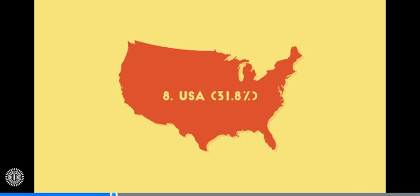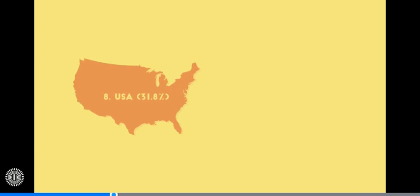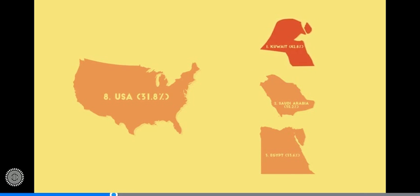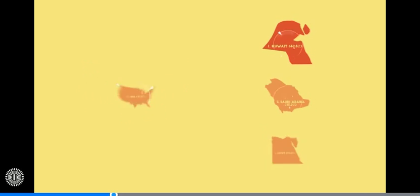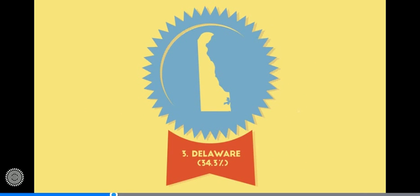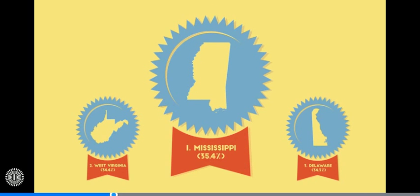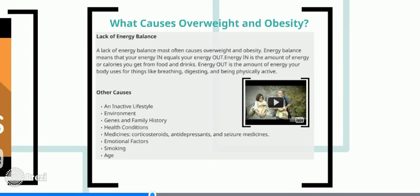The United States is the 8th fattest country in the world, with 31.8% of the population being overweight. The top three fattest countries are Egypt with 33.6%, Saudi Arabia with 35.2%, and Kuwait with 42.8%. The fattest states in the United States are Delaware with 34.3% of its population being obese, West Virginia with 34.4%, and Mississippi with 35.4%. What causes overweight and obesity?